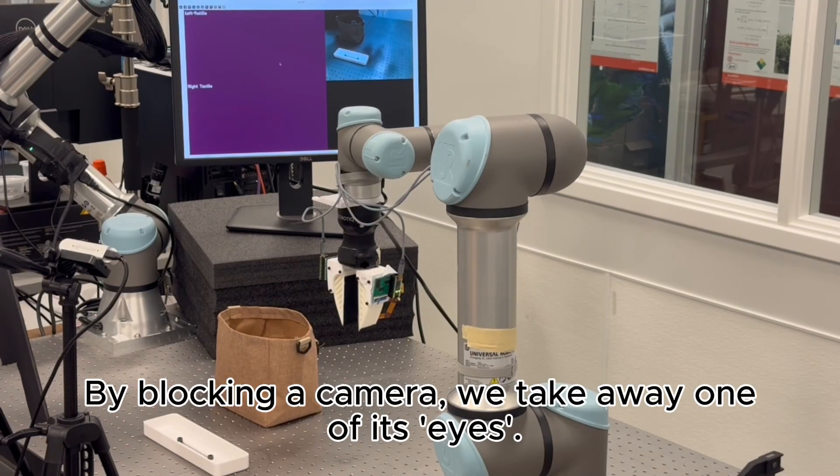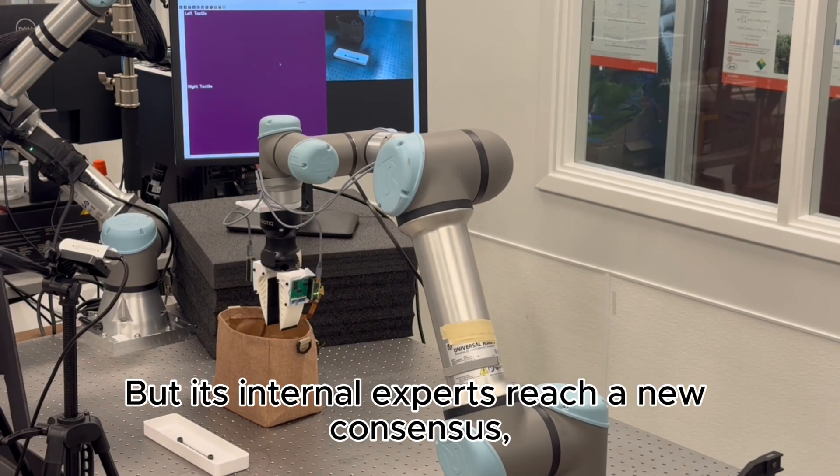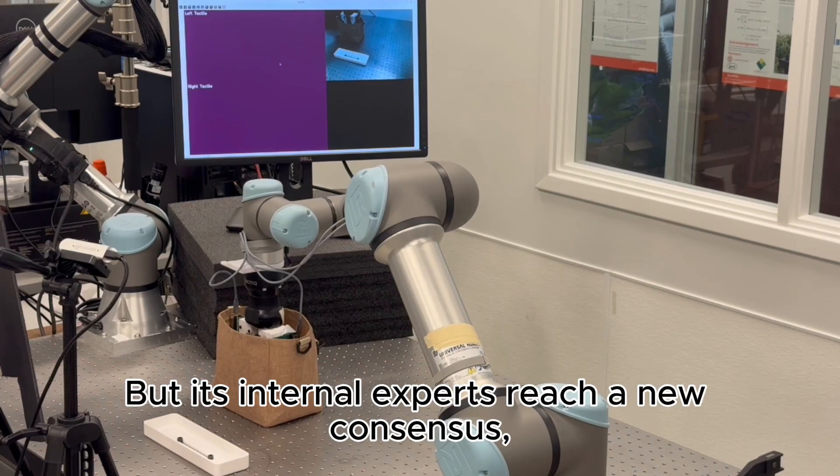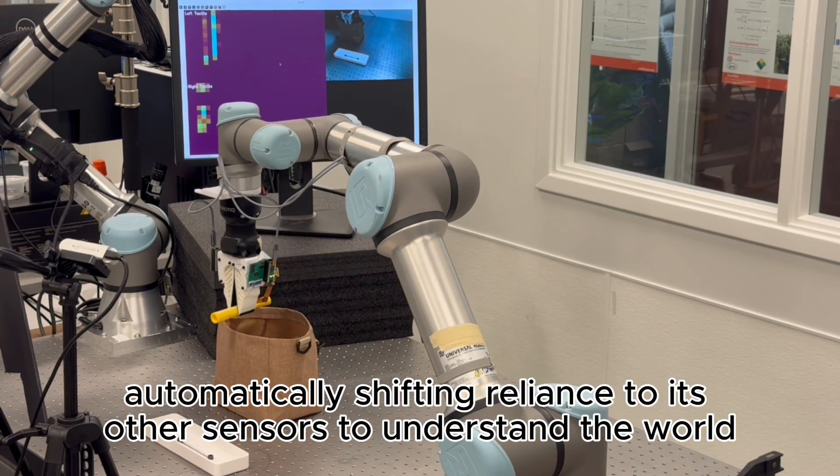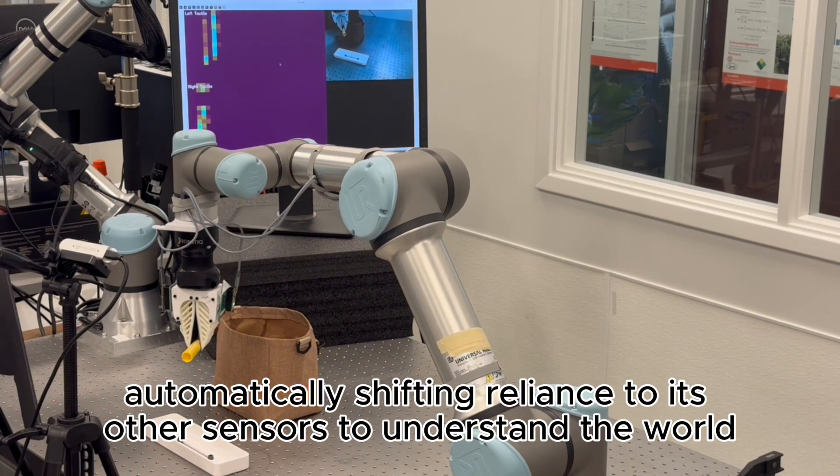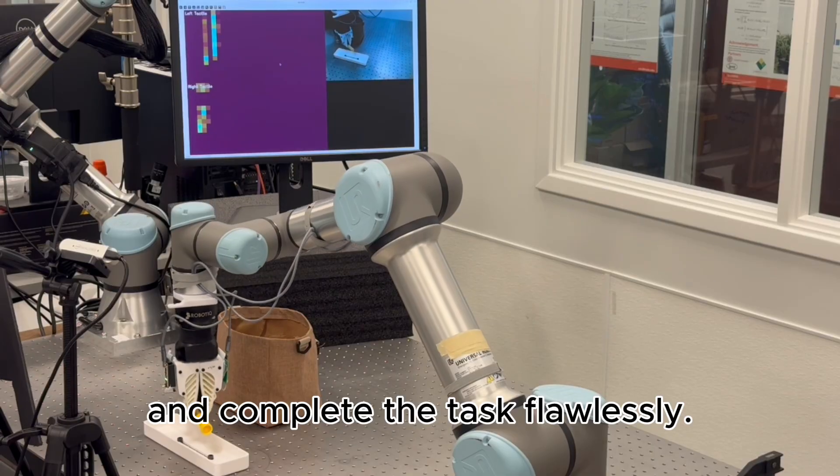By blocking a camera, we take away one of its eyes. But its internal experts reach a new consensus, automatically shifting reliance to its other sensors to understand the world and complete the task flawlessly.